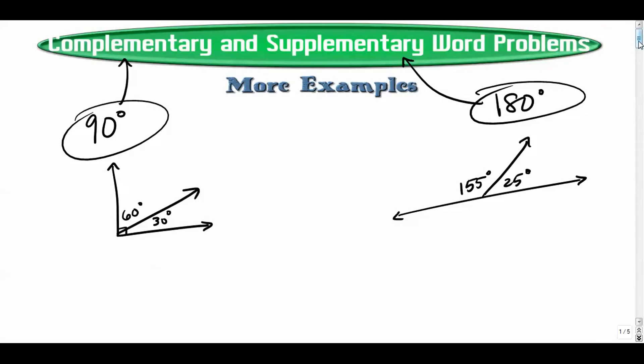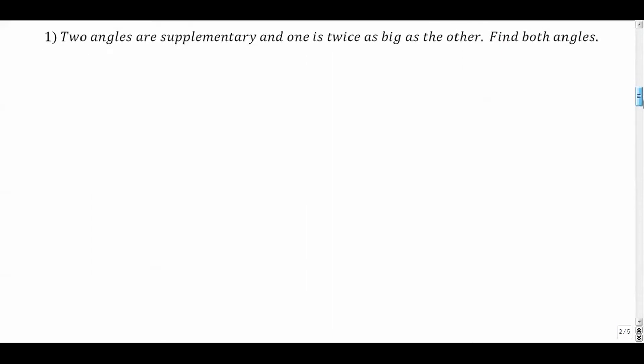So here we go. Number one: two angles are supplementary and one is twice as big as the other. I'm going to highlight that word and immediately let myself know that we're dealing with 180. And one is twice as big as the other, and I need to find both angles.